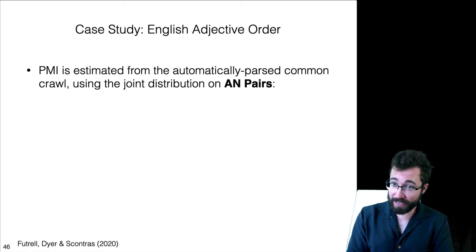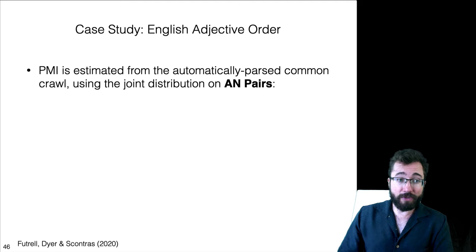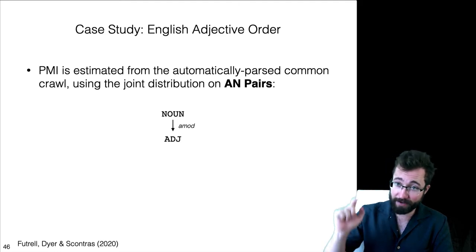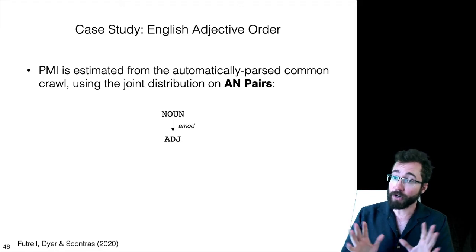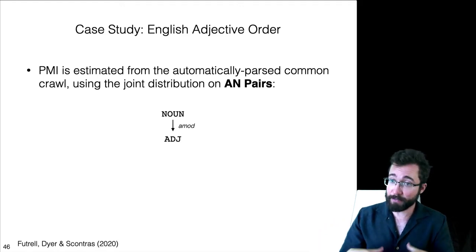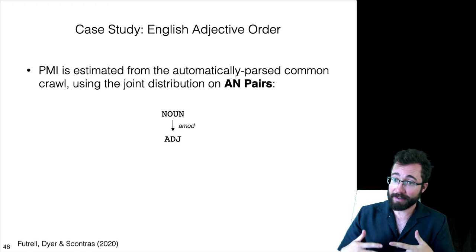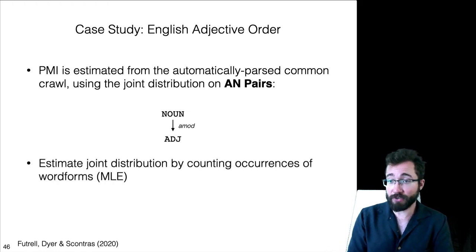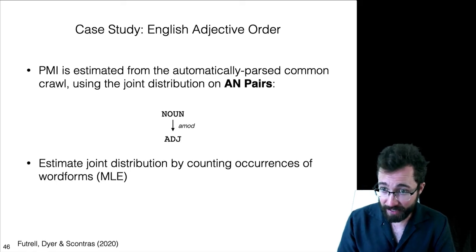Now, to get the estimates of PMI, we are going to need to get the PMI between word forms. We do that by collecting up these structures that we call AAN pairs from the automatically parsed common crawl. So, these are things that have a noun as the head and adjective as the dependent and relation type A mod. Regardless of the order, we can collect up these pairs. We get a giant collection of nouns and adjectives and AN pairs. And then we can estimate the joint distribution of noun word forms and adjective word forms by a maximum likelihood estimation on those counts.